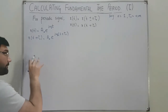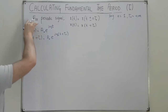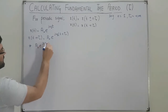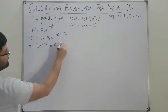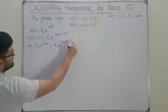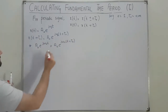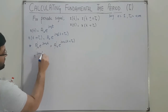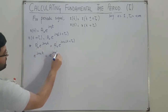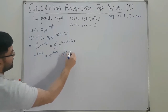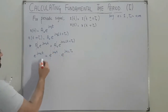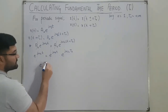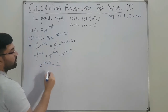If this signal is periodic, then x(t + T₀) = x(t), which means A₀ · e^(jω₀t) = A₀ · e^(jω₀(t + T₀)). A₀ cancels out, leaving e^(jω₀t) = e^(jω₀t) · e^(jω₀T₀). The e^(jω₀t) terms cancel, and we are left with e^(jω₀T₀) = 1.